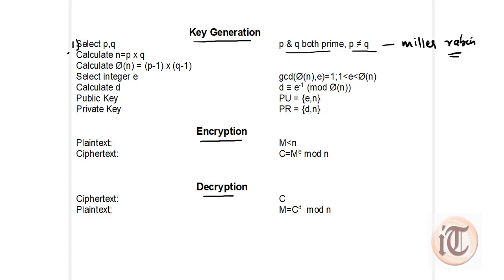The second step is to calculate n, which equals p times q. This value of n must be known to both sender and receiver. The third step is to calculate phi of n, the Euler-Totient function. Since p and q are both prime numbers, phi of n can be directly written as p minus 1 times q minus 1.